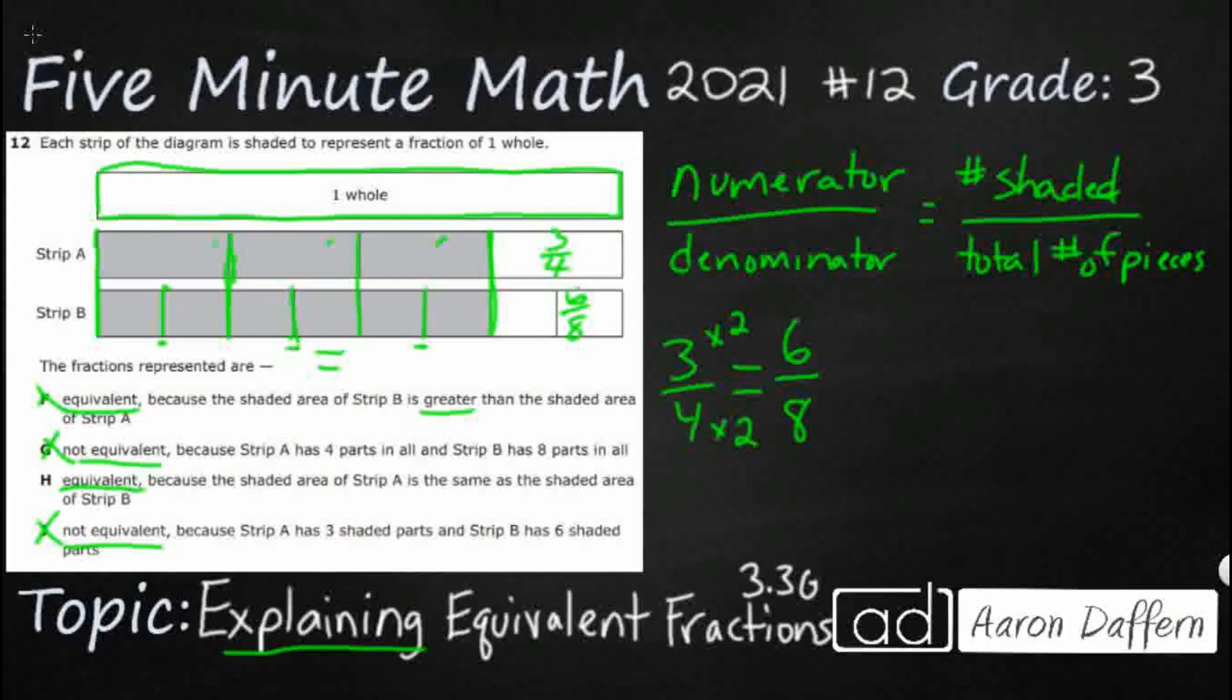Let's hope H works. Equivalent, because the shaded strip of strip A is the same. There we go. It's the same. That's exactly what we need. The size of each piece is different, but the total shaded area is the same. Answer is H.